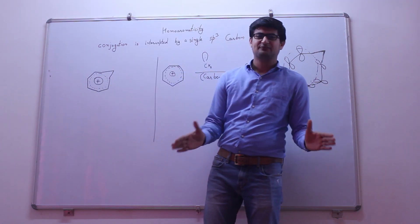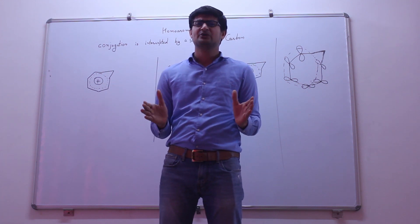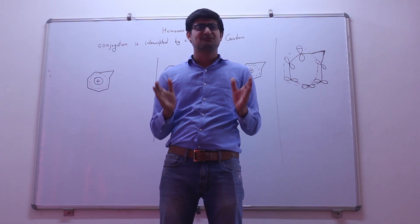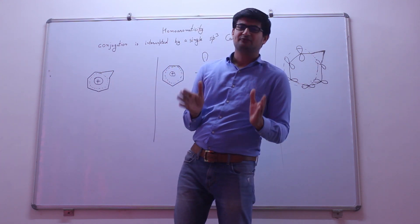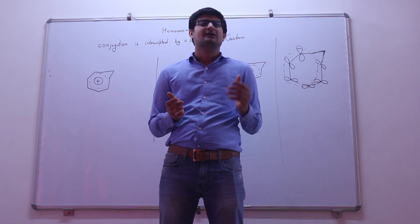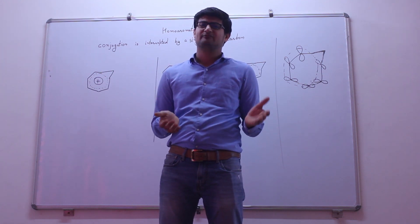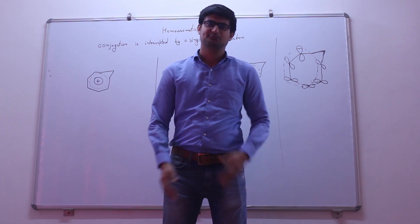Concluding this video, we can say that homoaromatic compounds are compounds which contain at least one sp3 hybridized carbon, while the rest of the carbons lie in one plane and show aromatic nature. The sp3 hybridized carbon will lie above or below the plane of the aromatic compound. Thank you.